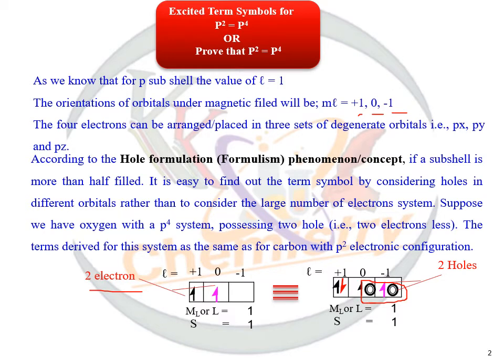So we can say that the number of unoccupied sites or holes to be equivalent to the number of electrons. Now you can just perform or write the term symbol for P² system instead of P⁴ system because both systems are equivalent to each other.